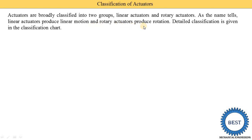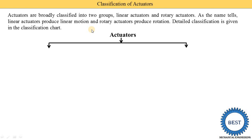The detailed classification is given in the classification charts. Actuators convert hydraulic energy or pneumatic energy into mechanical energy — so the input is hydraulic or pneumatic energy and it is converted into mechanical energy. If we require this mechanical energy in a linear motion, we use linear actuators, and if we require it in rotational form, we use rotary actuators.